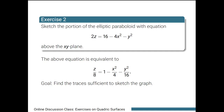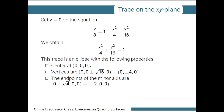Thus, the traces that we want are the three coordinate planes: the xy, yz, and xz-plane. We start with the traces that are ellipses, so in this case, we start with the trace on the xy-plane. Setting z equal to 0 and rearranging, we get x squared over 4 plus y squared over 16 equals 1.